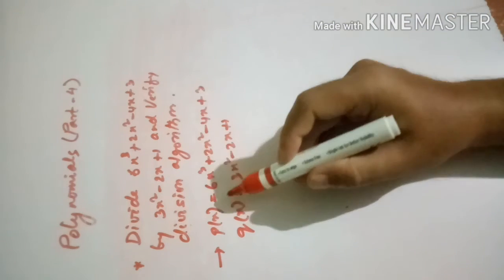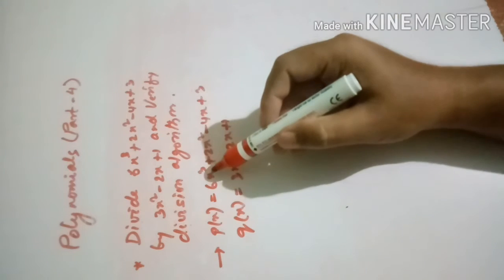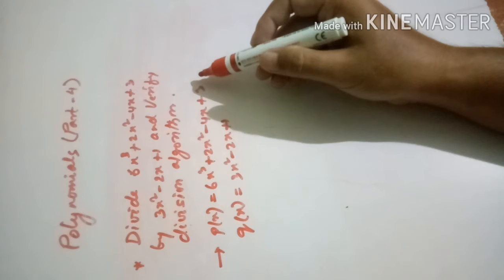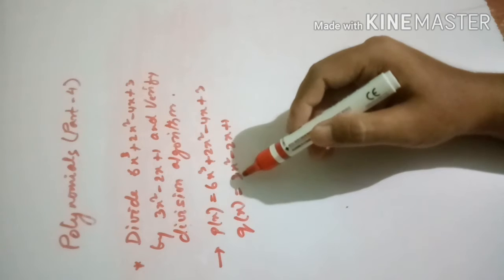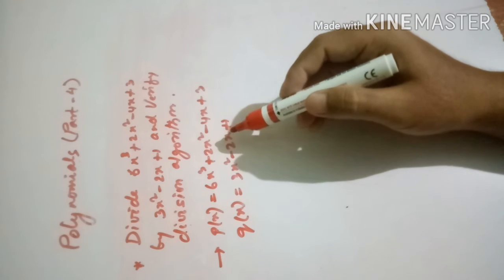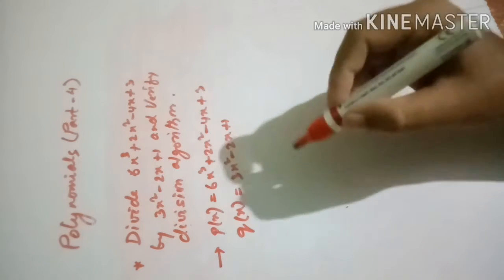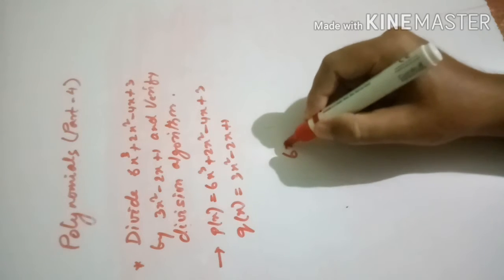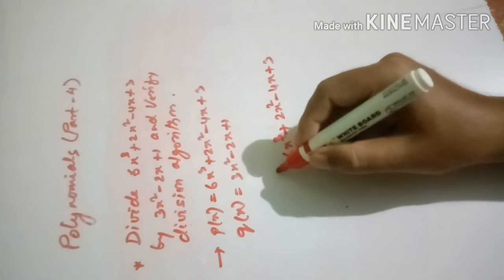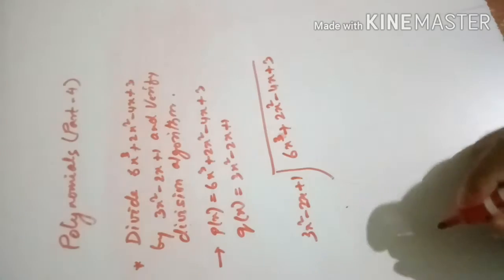Check whether the first polynomial is in standard form: highest power 3, next 2, next 1, next 0 — yes, it is in standard form. q(x) = 3x² − 2x + 1 is also in standard form. p(x) has higher degree, so p(x) is the dividend and q(x) is the divisor. We write 6x³ + 2x² − 4x + 3 divided by 3x² − 2x + 1.